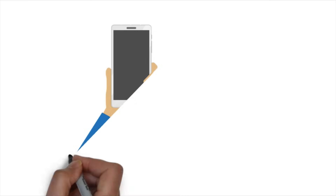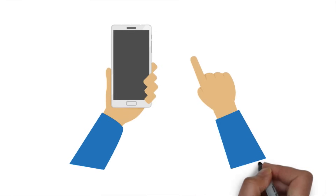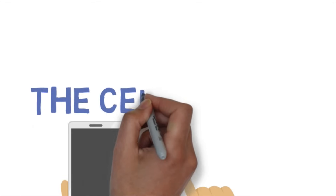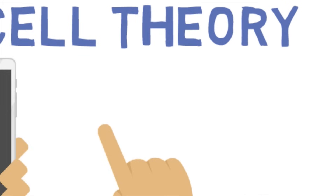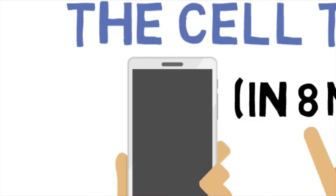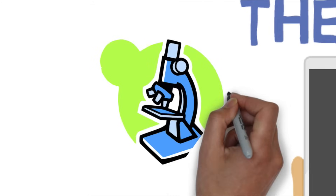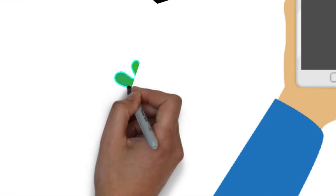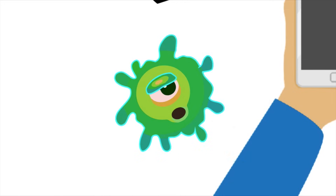Hey guys, welcome back to a STEM Stream tutorial. We're going to cover the cell theory today in just about under eight minutes. It's not too complicated of a topic, but it's extremely important. Most people don't know that this theory is one of the most historic, scientific, universally accepted concepts, and it essentially talks about how living organisms on this planet are made up of cells.